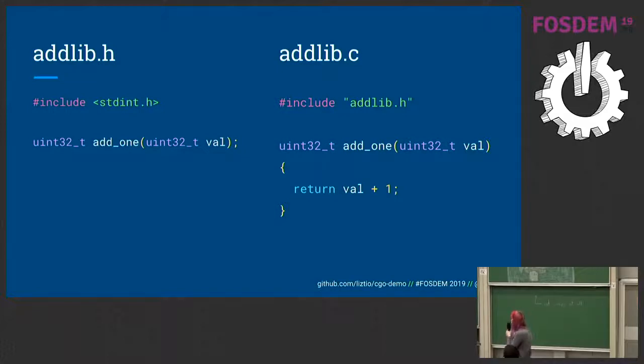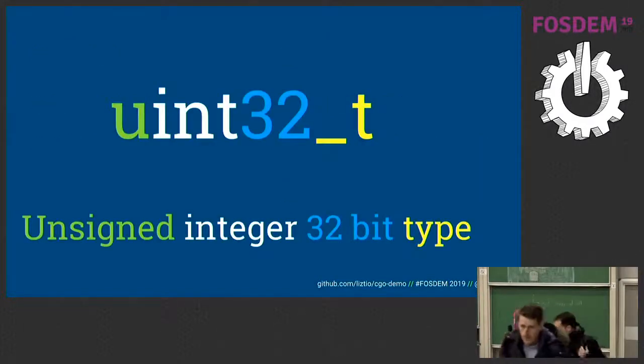This is a very basic C function. On the left is a header file. C separates the declaration of a function from the actual implementation. Think of it sort of like an interface, but a lot clunkier. So I define a function on the left, and then I actually implement it on the right, making sure to include those headers. If you don't understand the types, unsigned integer, 32-bit, underscore type. Everything in C, back then they had to use as few characters as possible, so everything is as confusing as you can imagine it being.